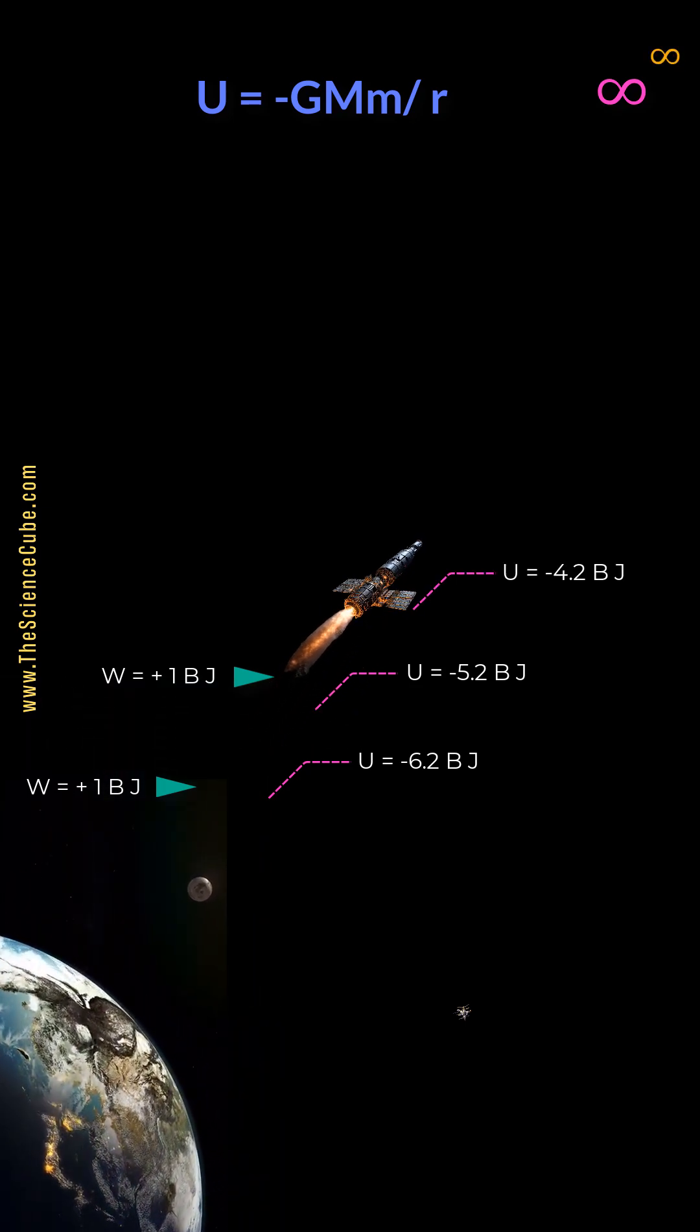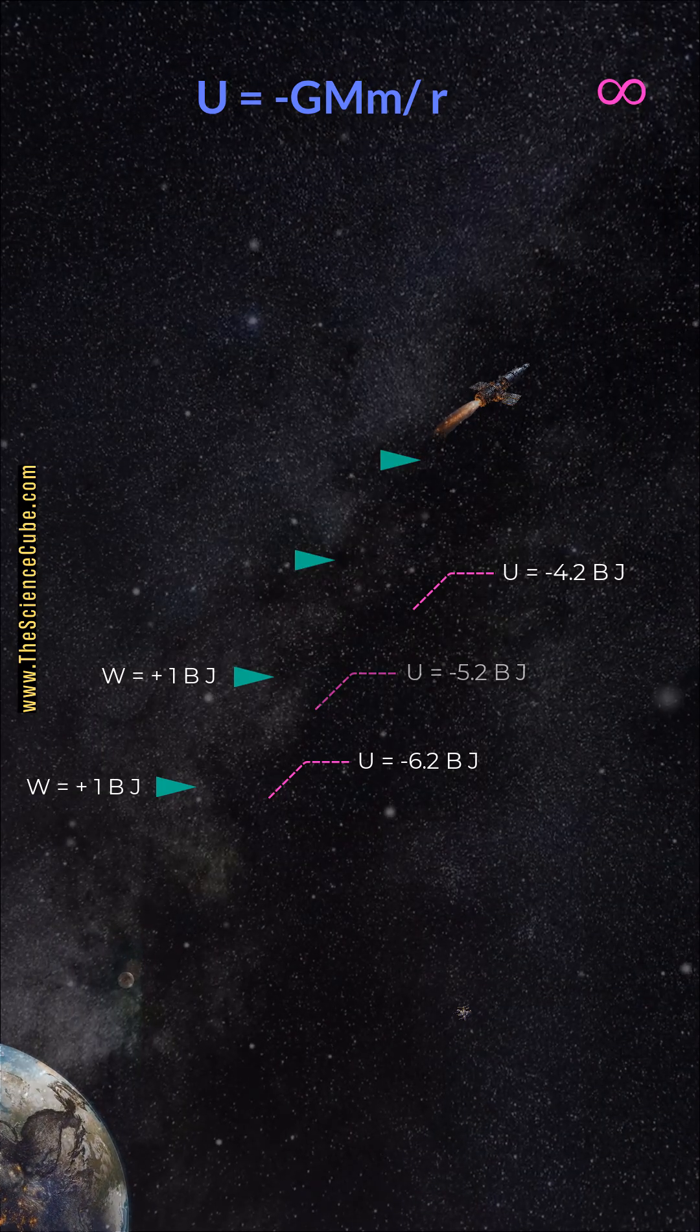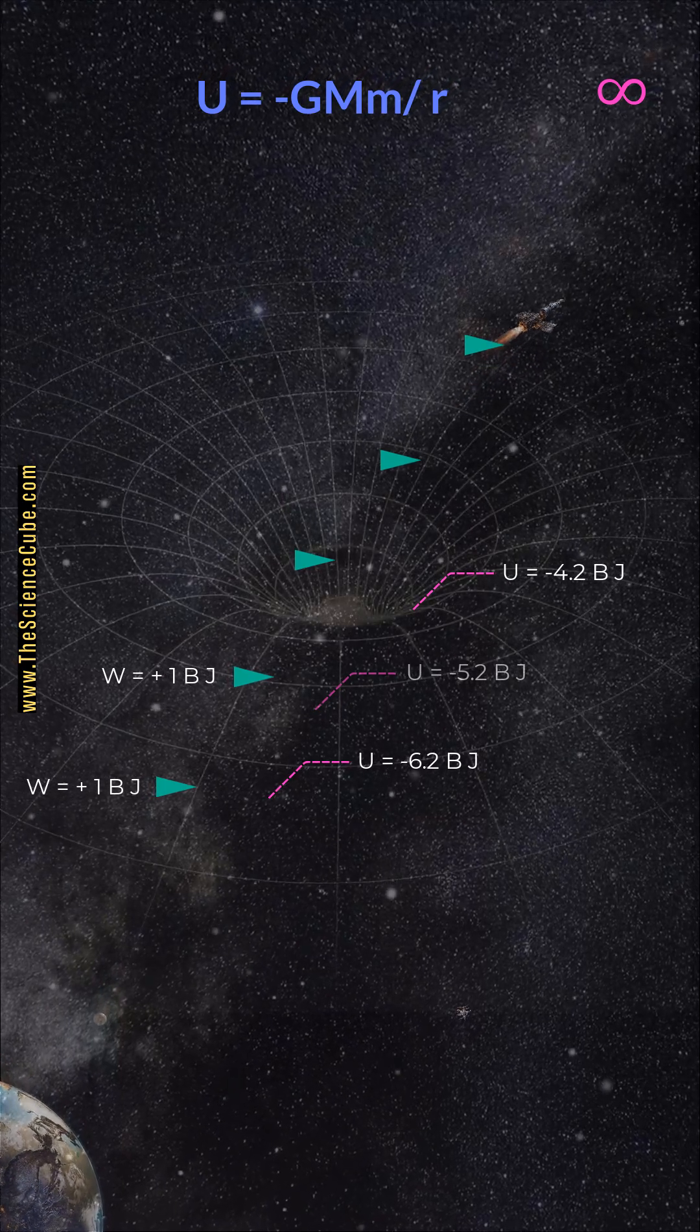You see, it is climbing out of the gravity well. And if we keep going, adding all 6.2 billion joules, potential energy reaches zero.